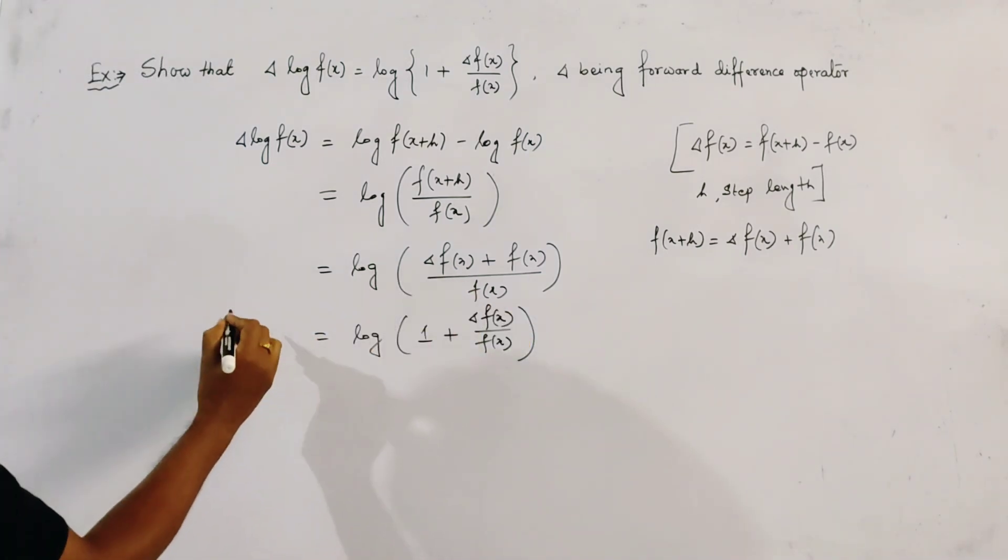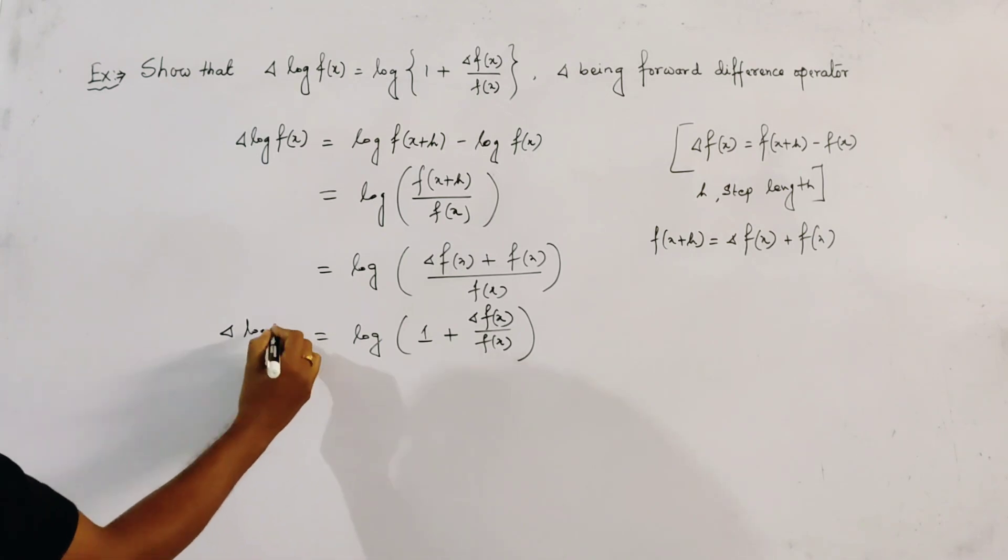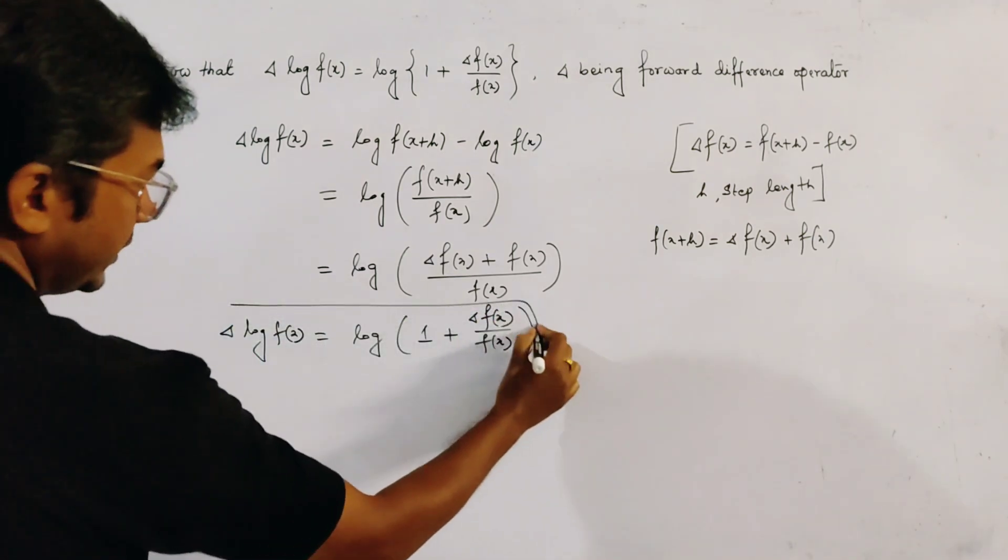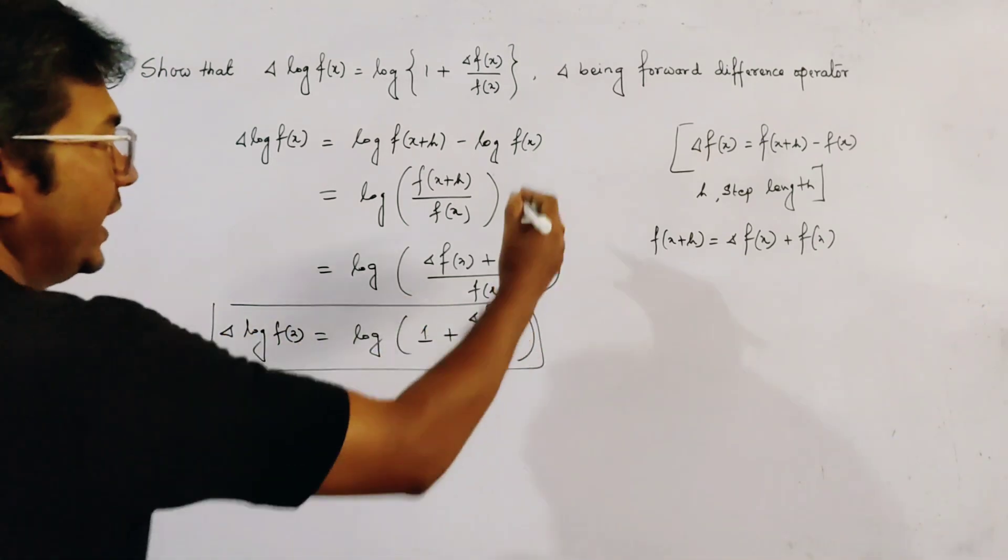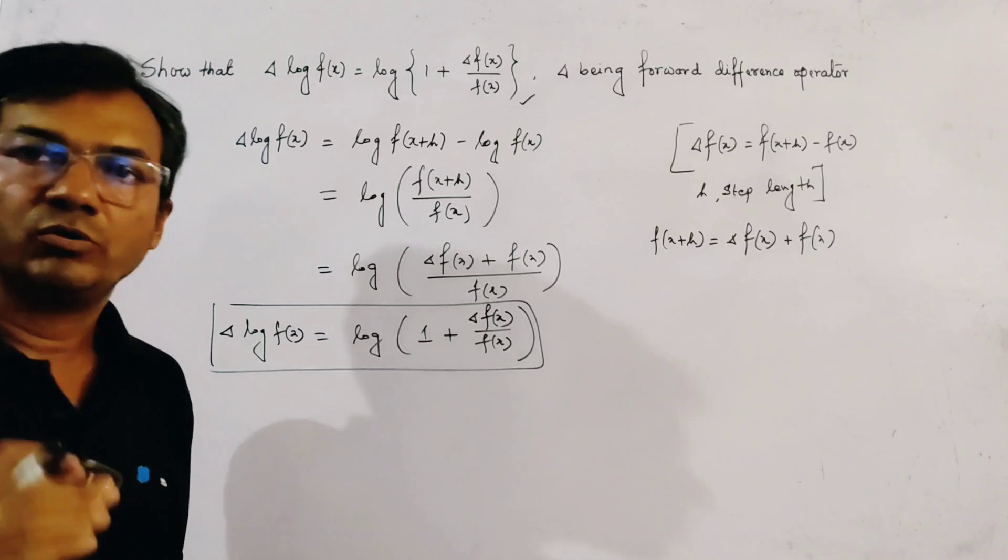So we already proved that delta log of f of x is given by log of 1 plus delta f of x by f of x, and this is our required property.